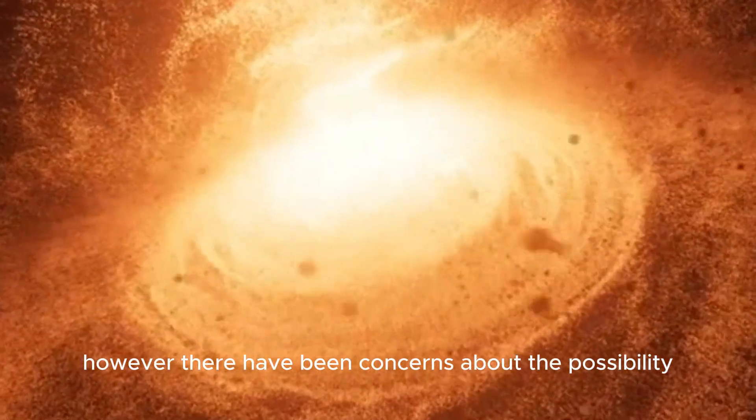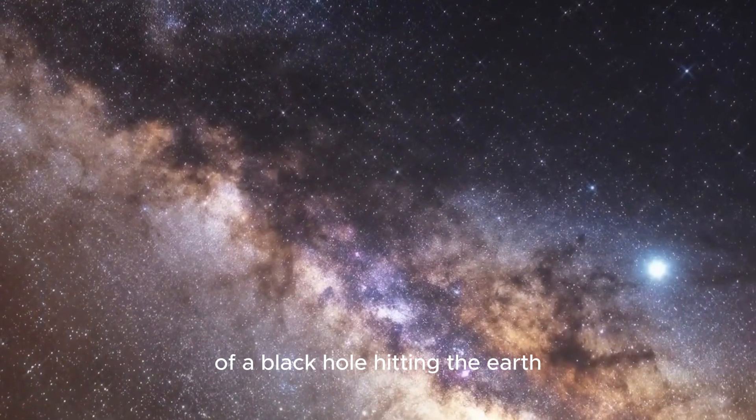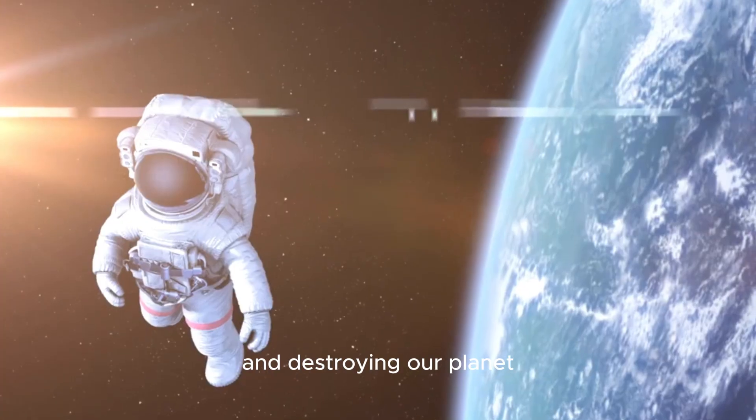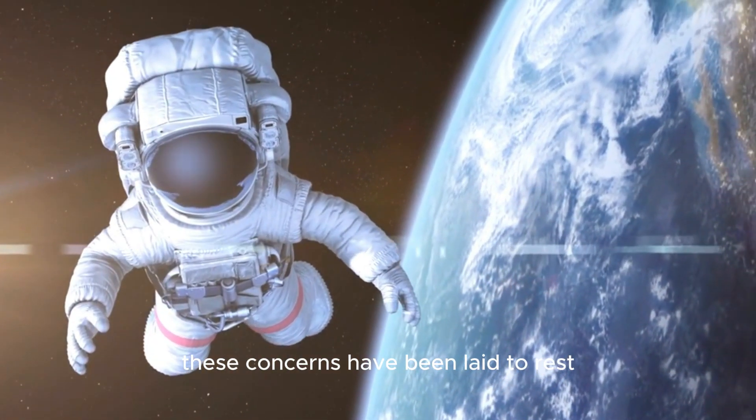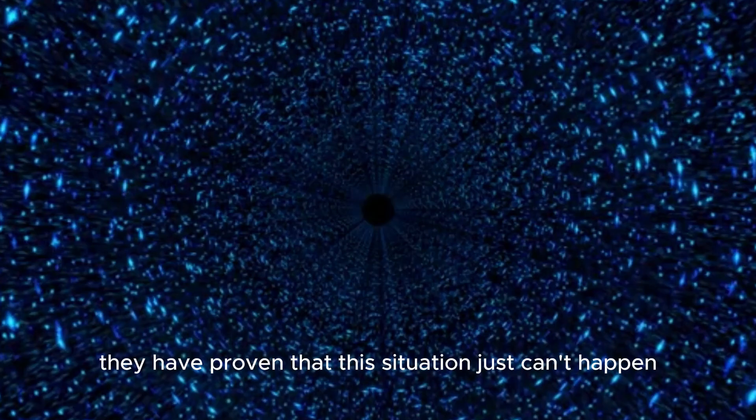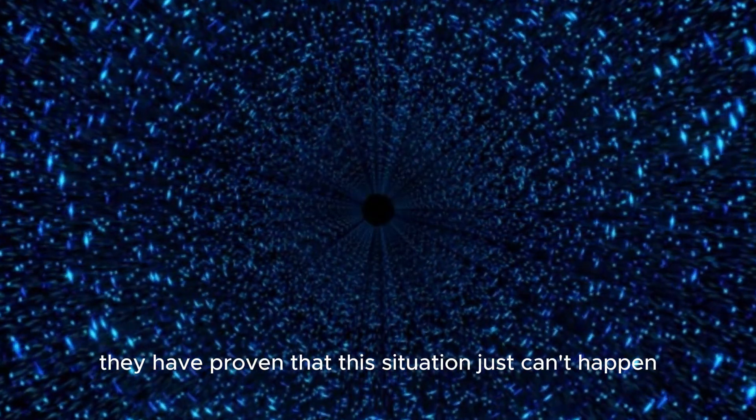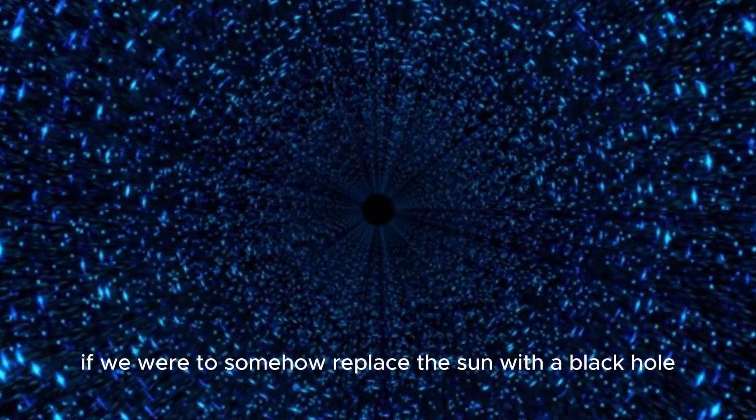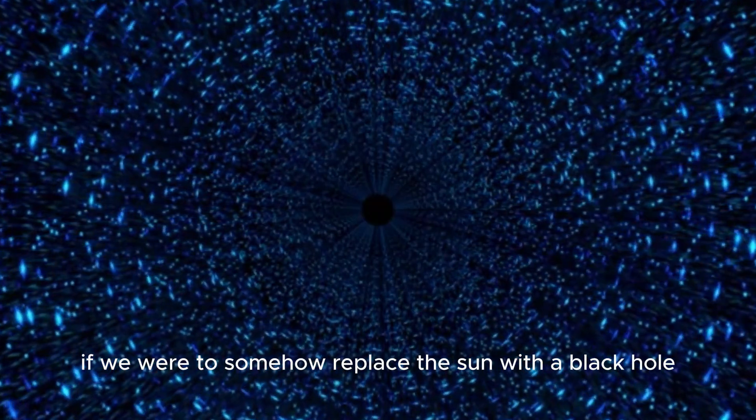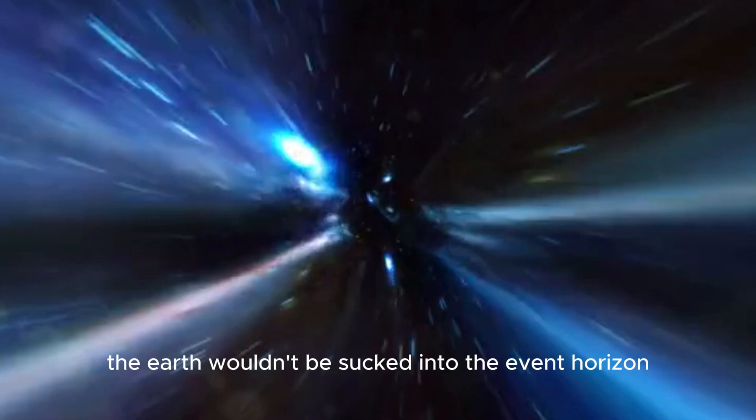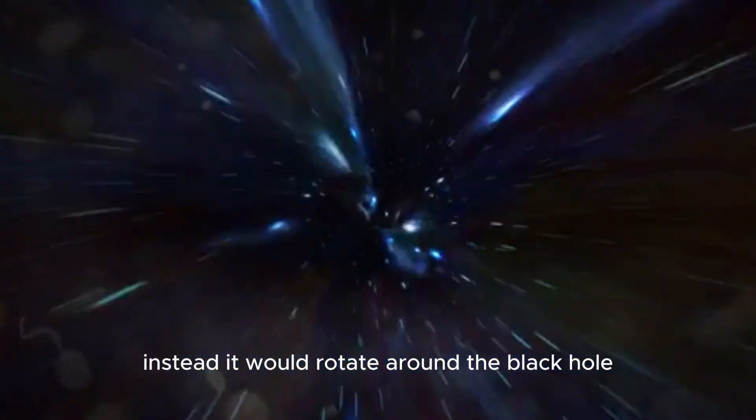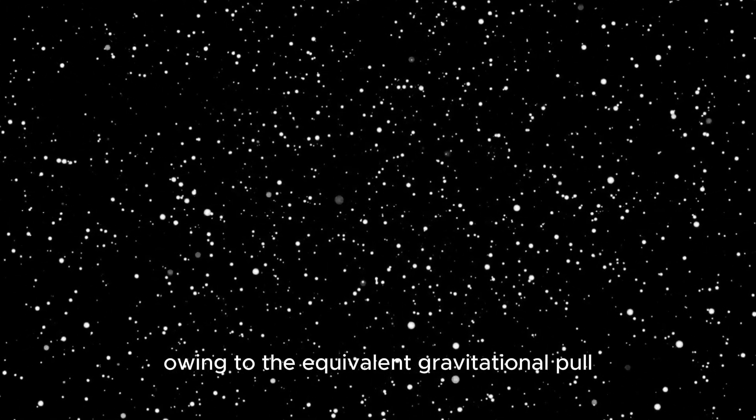However, there have been concerns about the possibility of a black hole hitting the Earth and destroying our planet. But thanks to unrelenting scientists, these concerns have been laid to rest. They have proven that this situation just can't happen. In fact, if we were to somehow replace the Sun with a black hole of the same mass, the Earth wouldn't be sucked into the event horizon. Instead, it would rotate around the black hole in a similar way it revolved around the Sun, owing to the equivalent gravitational pull.